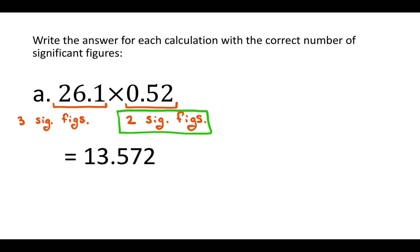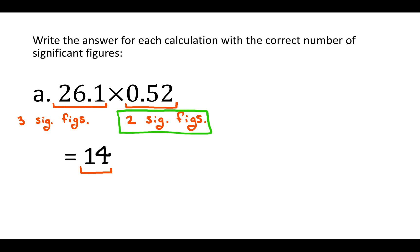Our answer can't be any more precise than that. Starting from the left and going to the right, that gives us the 1 and the 3 — that's where we want our number to end. We go to the next digit to the right: if it's 5 or above we round up, if it's below 5 we round down. This digit is 5 or above, so we round up and our answer will be 14. That's the answer to the correct number of significant figures.